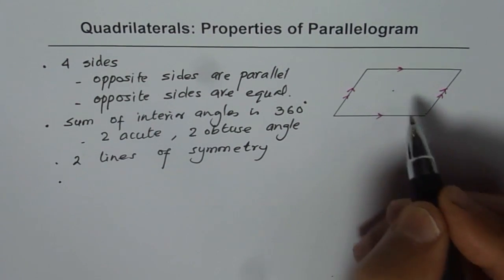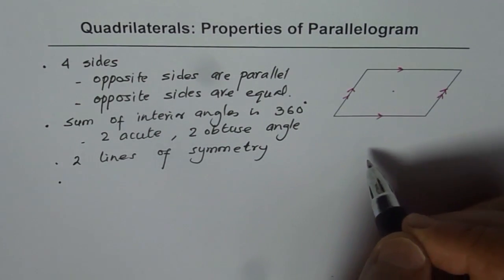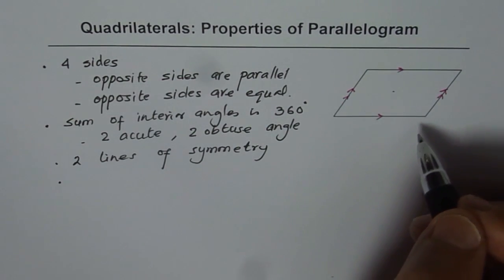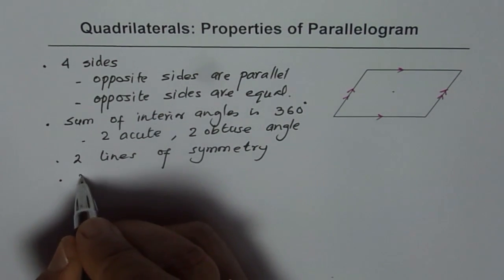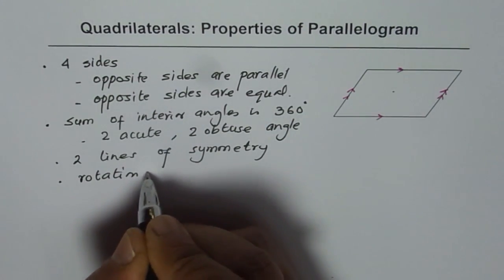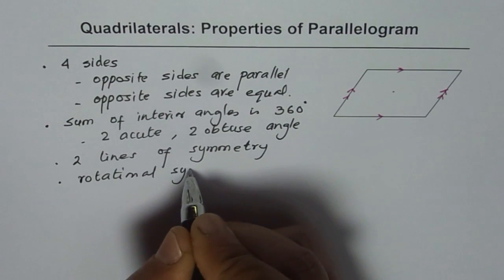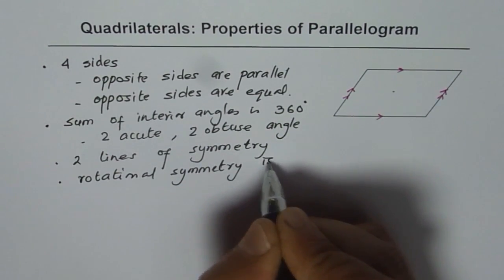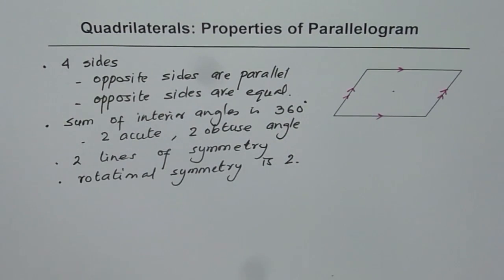Rotational symmetry is if I rotated about a point, after how much of angle and how many positions are there, then we get exactly the same figure. Well you find that the rotational symmetry for a parallelogram is two. Rotational symmetry is also two.